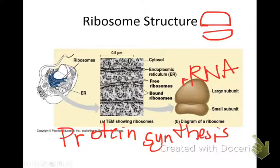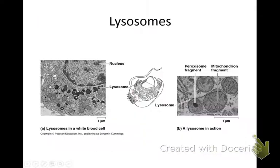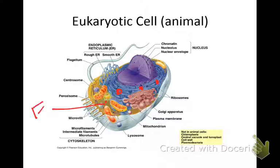There are two types of ribosomes. There are attached ribosomes, also called bound ribosomes, that are attached to the endoplasmic reticulum, or ER. These are found in eukaryotes only, because prokaryotes don't have an endoplasmic reticulum. And then there are free ribosomes that float freely in the cytoplasm — not attached to anything.